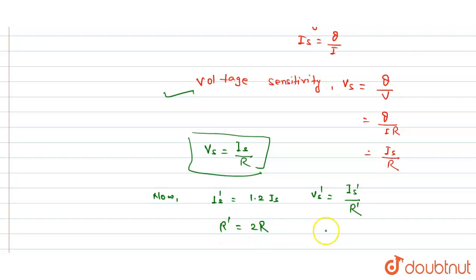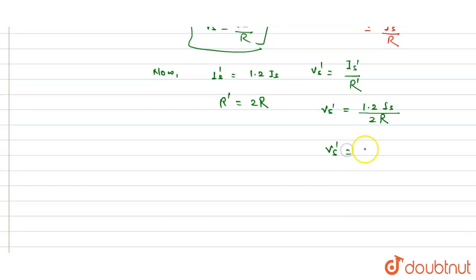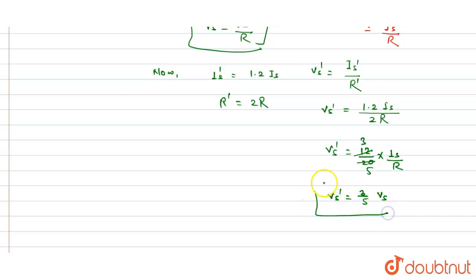So Vs' = (1.2·IS) / (2R) = (12/20)·(IS/R) = (3/5)·(IS/R). Therefore, Vs' = (3/5)·Vs. The voltage sensitivity becomes 3/5 times the original.